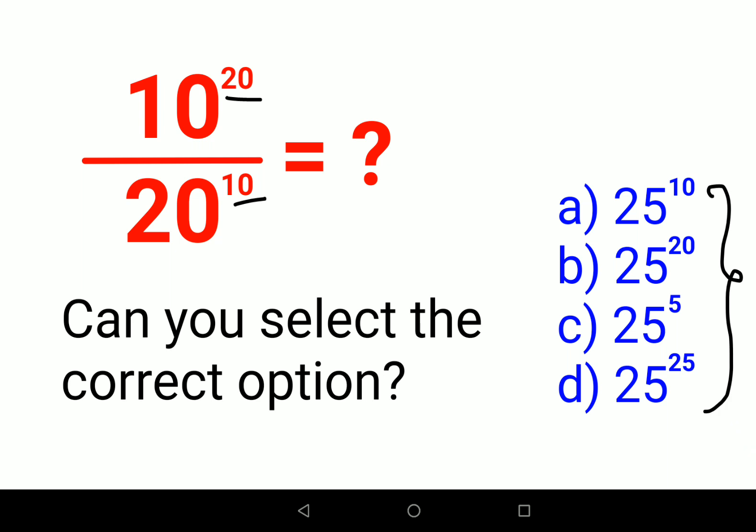options are given in terms of 25 raised to some power. So let's try and solve this as easily as possible. We have 10 raised to 20 divided by 20 raised to 10. First things first, we can write this 20